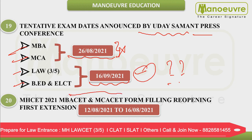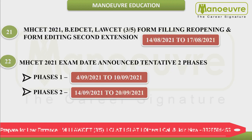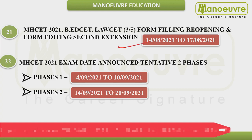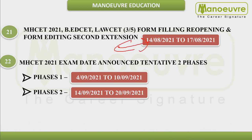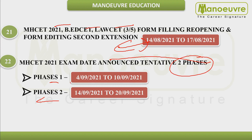After the conference, we got an update that the reopening of form filling was extended to 16th August. The most recent event is that reopening of form filling was extended further to 17th August for all these exams. The currently announced exam dates are phase-wise: Phase 1 from 4th September to 10th September, and Phase 2 from 14th September to 20th September.